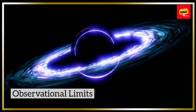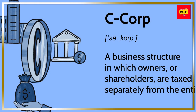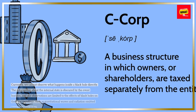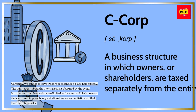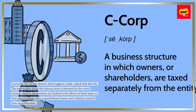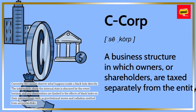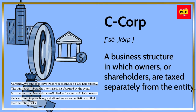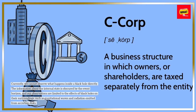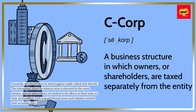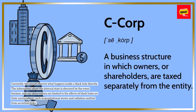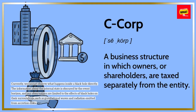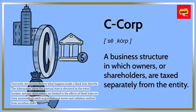Observational limits. Currently, we cannot observe what happens inside a black hole directly. The information about the internal state is obscured by the event horizon, and our observations are limited to the effects of black holes on their surroundings, such as gravitational waves and radiation emitted from accretion disks.